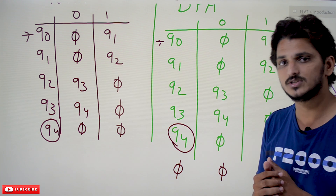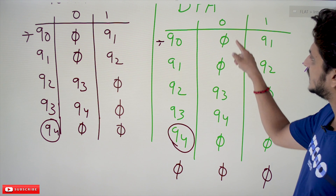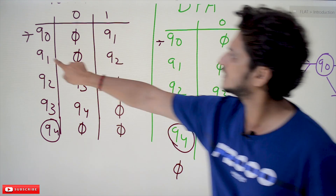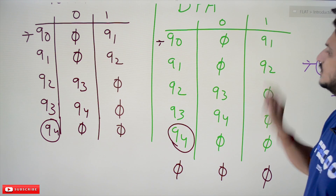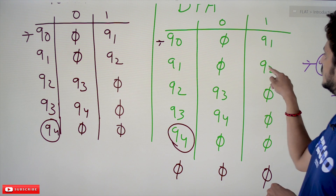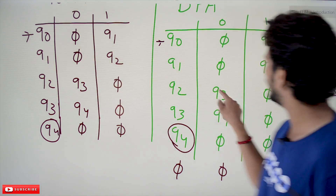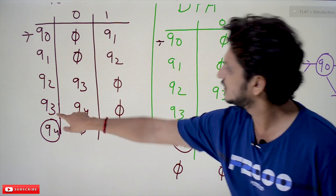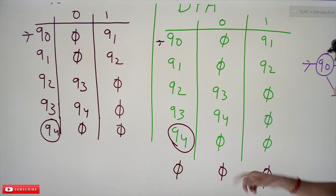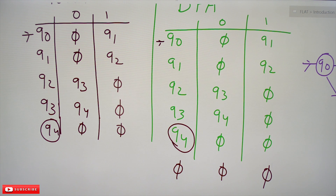Since Phi is considered as another state, we write the transitions for all possibilities. Q1 on 0 gives Phi, on 1 gives Q2. Q2 on 0 gives Q3, on 1 gives Phi. Q3 on 0 gives Q4, on 1 gives Phi. Q4 on 0 gives Phi, on 1 gives Phi.